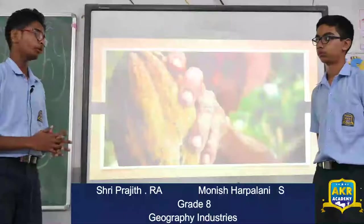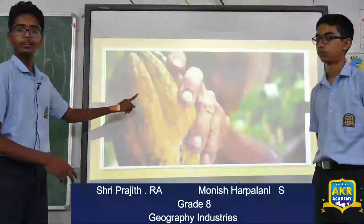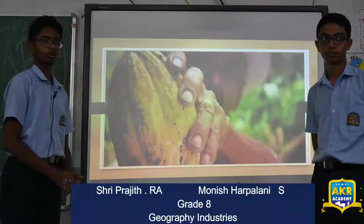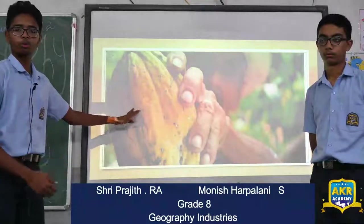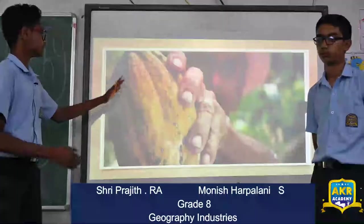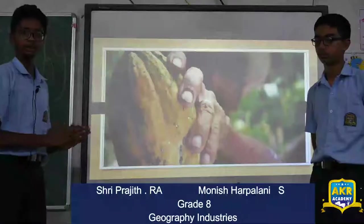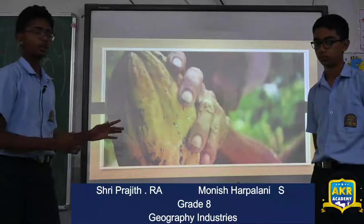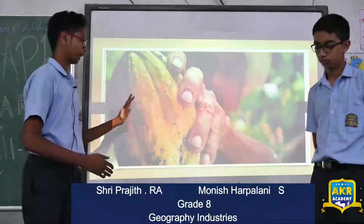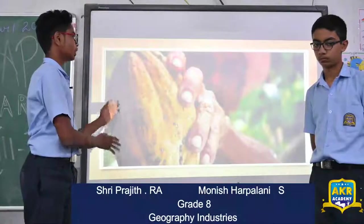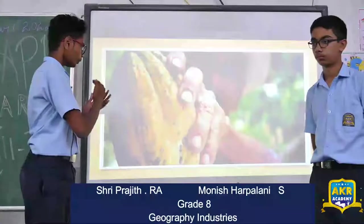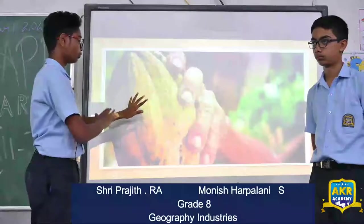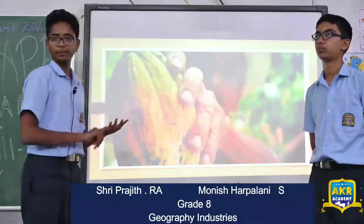Now let's start about our lesson. Can anyone say what this fruit is? This is Cocoa Fruit. Yes, this is Cocoa Fruit. Cocoa Fruit is the main raw material used to make chocolates. The Cocoa Fruits are the primary product — growing these Cocoa Fruits, including the agriculture of this Cocoa Fruit, is the primary activity.